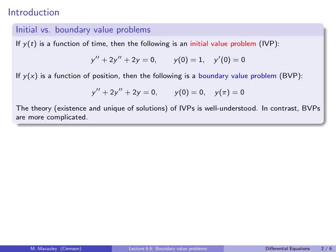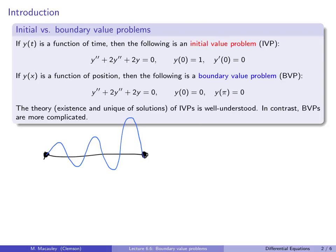A boundary value problem is going to be like this. If y is a function of position, maybe y is the temperature of a rod, then something like this will be a boundary value problem. y(0)=0 means the temperature is fixed at 0, and y(π)=0 means the temperature is fixed at the other end. The question is: what is the temperature in between? The only restrictions are that the temperature is fixed at the endpoints.